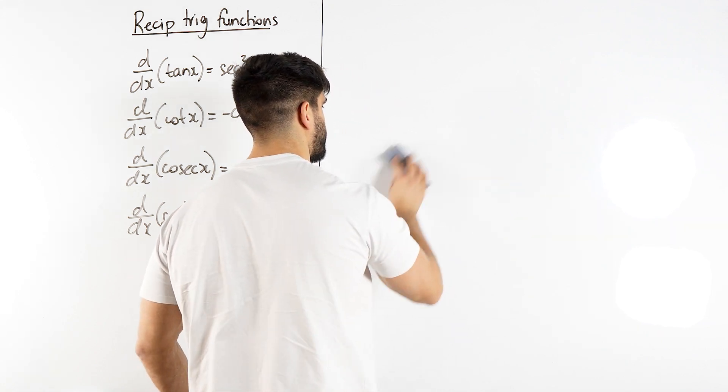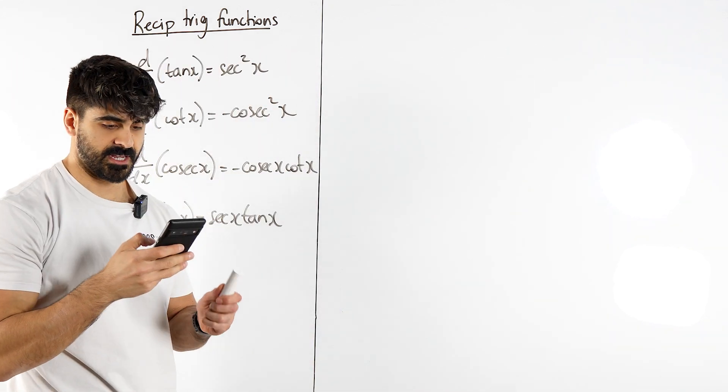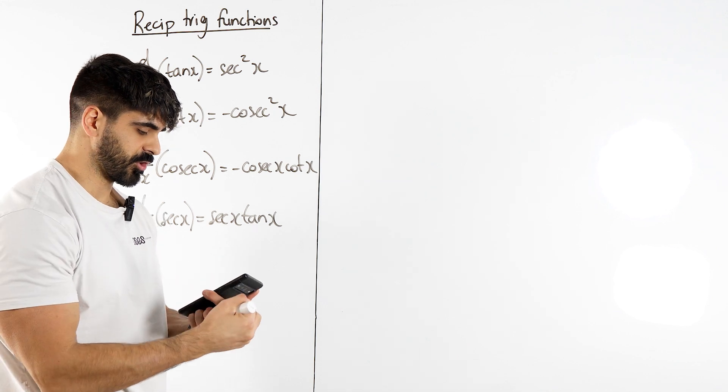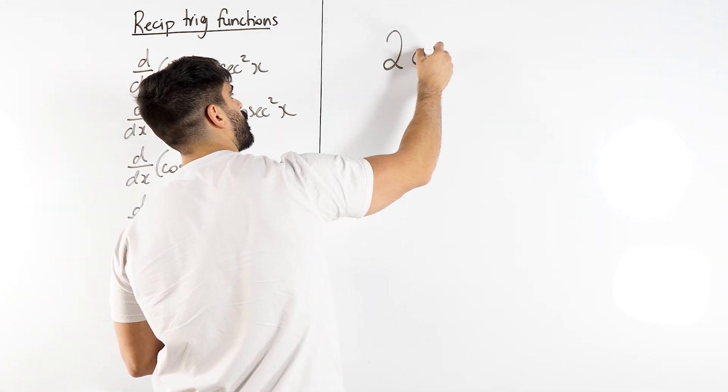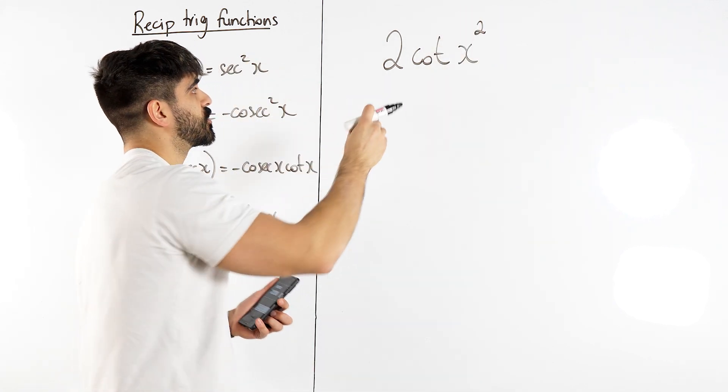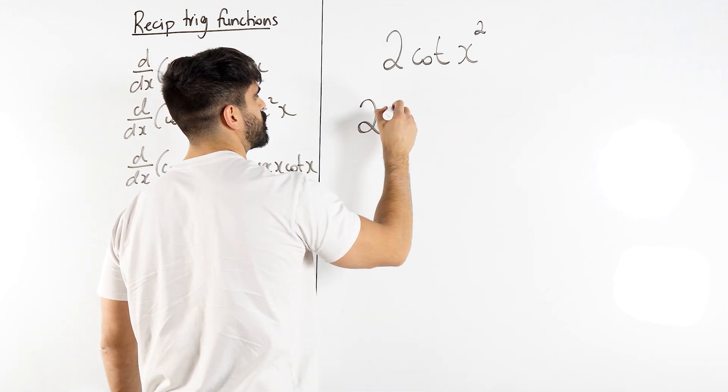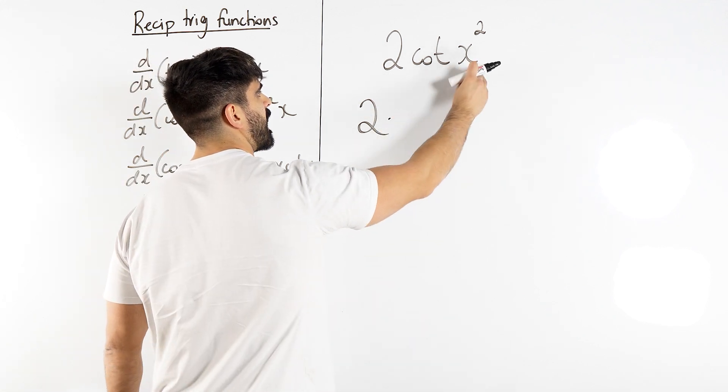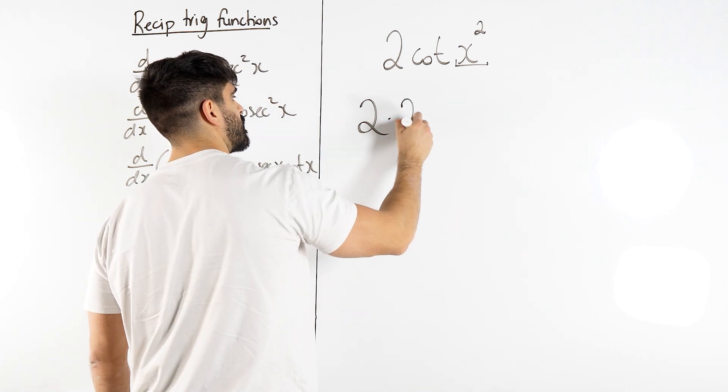Let's do some more. The next one I had planned was 2 cot of x squared. Now the first thing here is 2 is a multiplier, we don't do anything with it. Cot angle, you always differentiate the angle first. x squared differentiates to 2x.